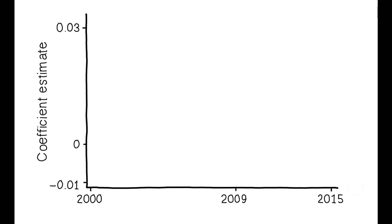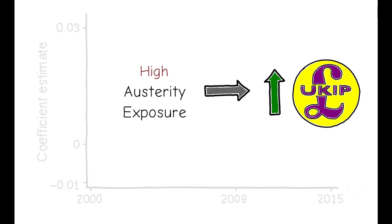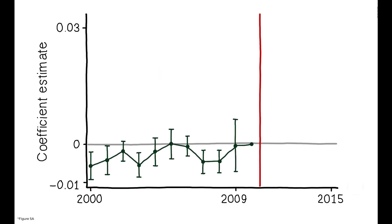The results point to a strong positive relationship between local exposure to the austerity measures and UKIP's electoral performance. Prior to the reforms, the relationship is flat. After 2010, however, there is a marked change.